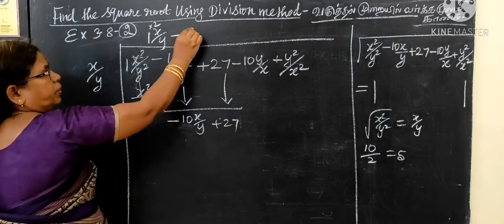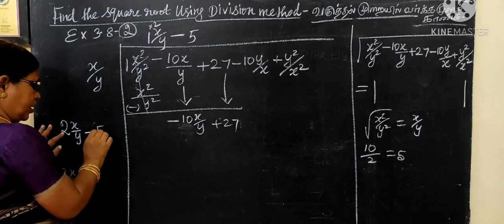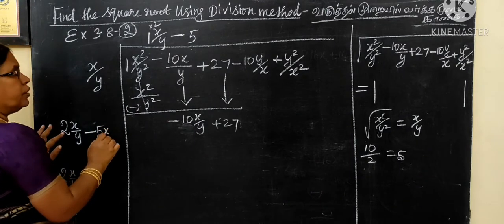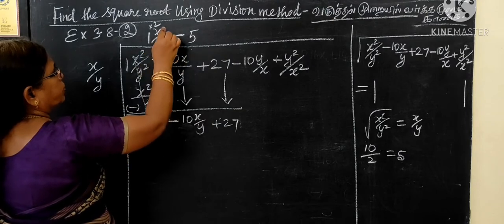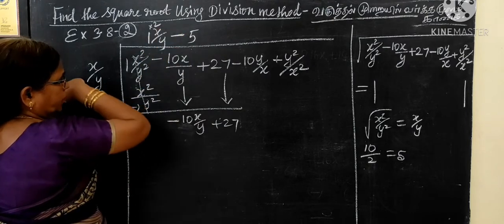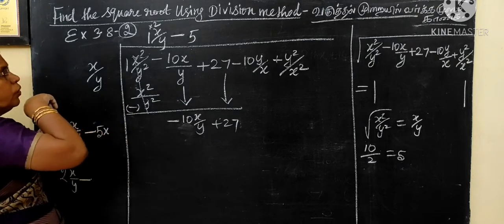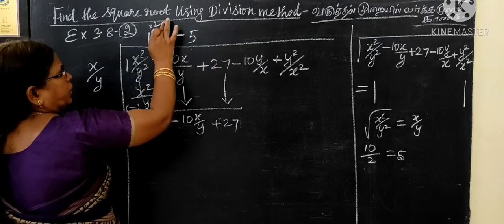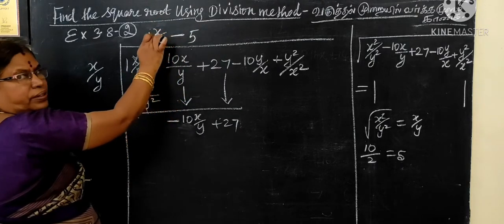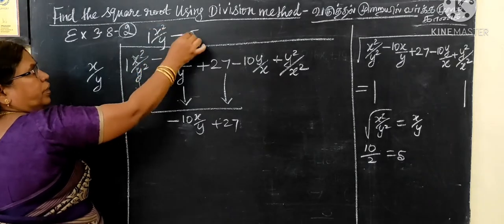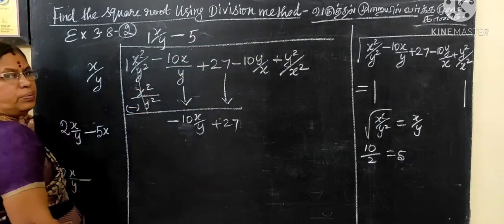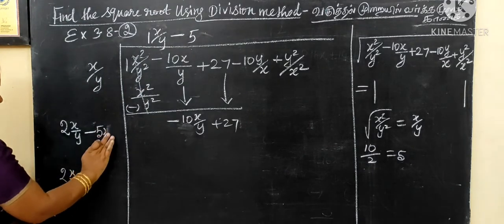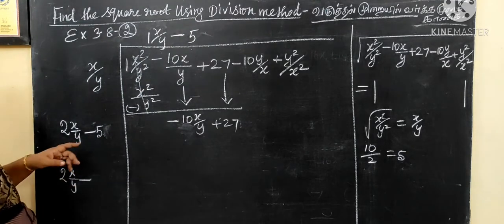So we have to do the same step. What are we? 5. Let's do this. It's x square by y square. Here it is. What are we? Here it is x square. We have x square.